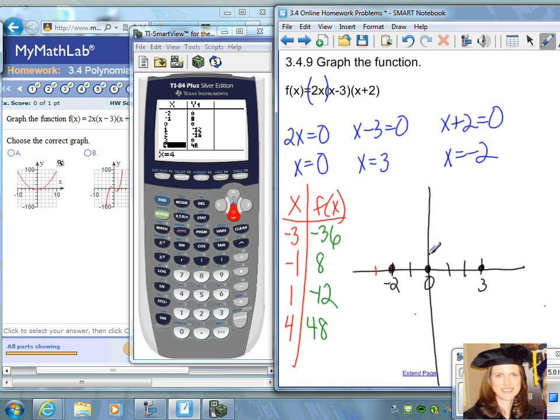I'm going to make the y-axis scale go by 10s: 10, 20, 30, 40, 50, and by 10s this way too. We're going to plot negative 3, negative 36. That's one of your points. Negative 2, 0 is a point we already have. Negative 1, positive 8 is the point. 1, negative 12, and 4, 48.